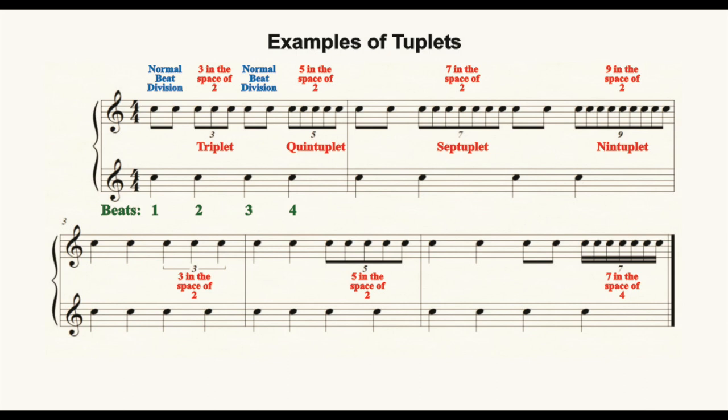In the next example, we have our second tuplet, called a quintuplet, meaning that our normal division of two eighth notes will now be replaced within the same space of time with a group of five eighth notes. This sounds like... Note the number 5 below the grouping to make the division clear. In measure 2, we find a septuplet where our normal division of two eighth notes has been replaced by a set of seven eighth notes to be played in the same space of time. This sounds like... Note the number 7 below the grouping to make the grouping clear to the performer.